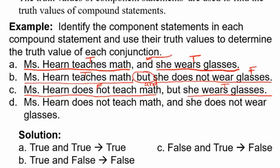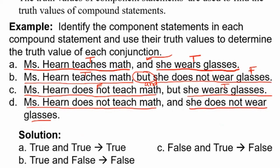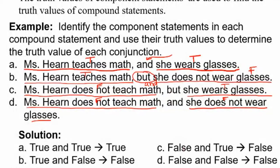How about part D? 'Miss Hearn does not teach math and she does not wear glasses.' The first component is 'Miss Hearn does not teach math' and the second component is 'she does not wear glasses.' They're both false this time. So if someone says to you 'Miss Hearn does not teach math and she does not wear glasses,' are they telling the truth or lying? Just because they said two falses does not make a true.